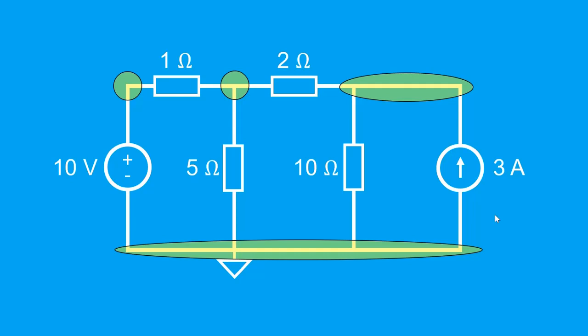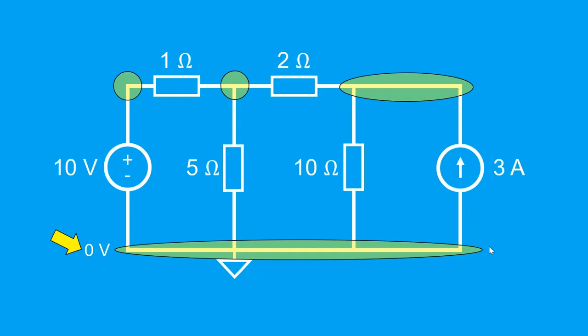Now let's try to see if we can identify any node voltages. The bottom node is connected to ground, so it has a node voltage of 0 volts. Up here, we can tell that the node voltage is 10 volts. Remember that the voltage source fixes the voltage on its two terminals — so if the bottom end is 0 and we have a voltage gain of 10 volts, then the top node voltage is 10 volts. We can move on to the second step: writing the KCL equations at each unknown node. Let's label the unknown node voltages.